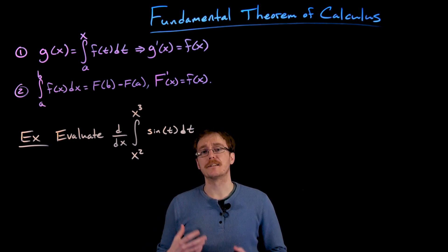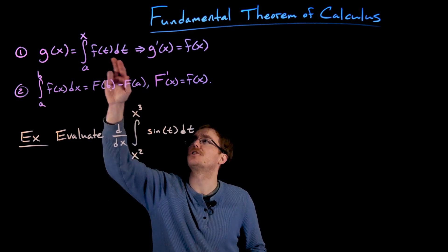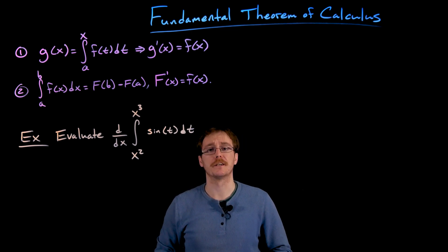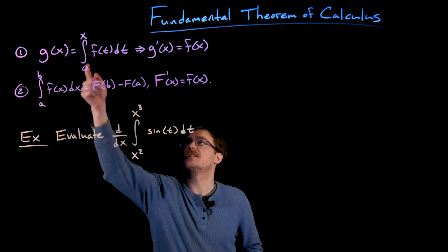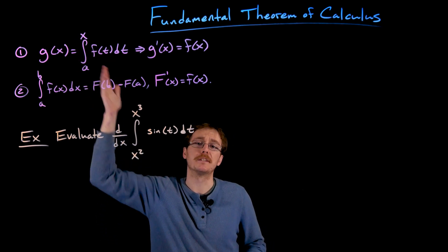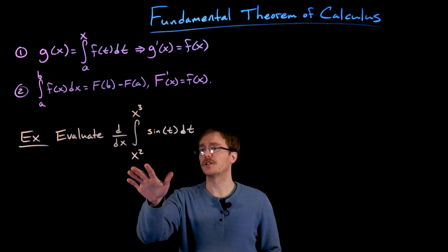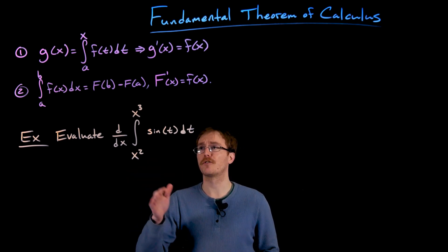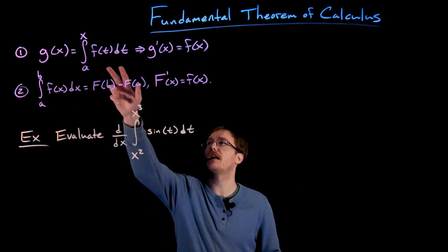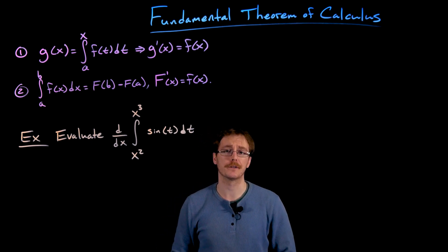The important thing to remember is the variable inside our function and that we're differentiating with respect to should not be the same as the variable showing up in our limits of integration. Technically, the limits of integration are t values, and to have it vary, we let that t value be some other variable x. We can observe right away that the integral from x squared to x cubed of sine of t dt is not of that particular form for which the first part of the fundamental theorem of calculus applies.